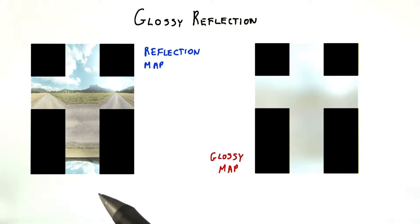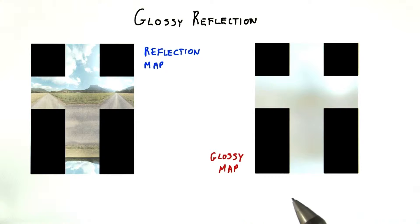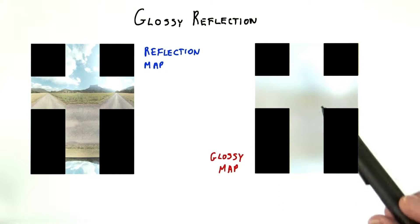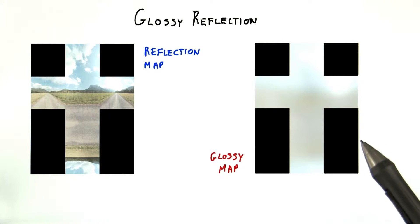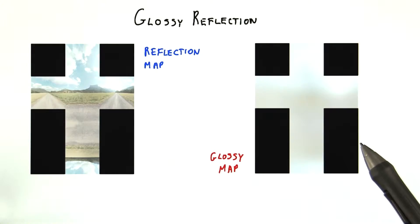One way to simulate this effect is to blur the reflection map. This blurring is usually done in advance and the texture stored. Some cleverness is needed to properly filter from face to face of the cube map, but utilities exist that perform this function for you.